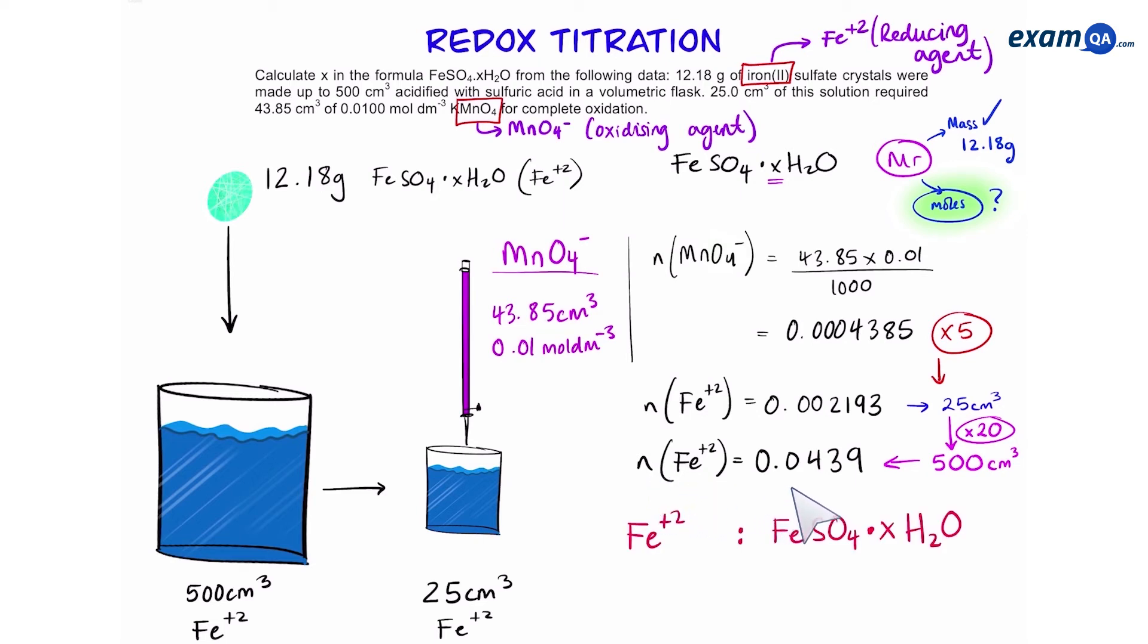This is the moles of iron 2+. Now that we know the moles of iron, what about the moles of iron sulfate? The ratio is 1 to 1 because iron sulfate has only got one iron in its formula. So therefore the moles of iron sulfate is also going to be 0.0439.